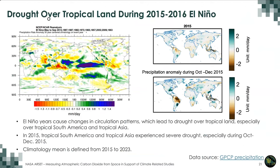2015-2016 had the strongest El Niño event during the OCO2 record. The left panel shows composite precipitation anomalies during El Niño years, showing reduced precipitation over tropical land — especially tropical South America and tropical Asia. The right panels show the annual mean precipitation anomalies in 2015 and the precipitation anomaly during October to December 2015, confirming greatly reduced precipitation over tropical regions, especially during the second half of the year.